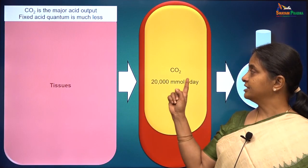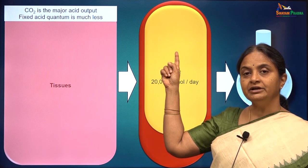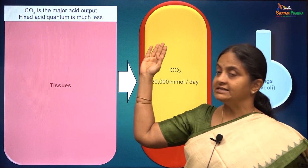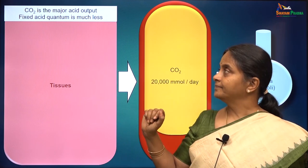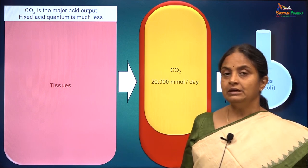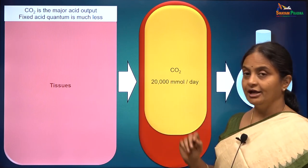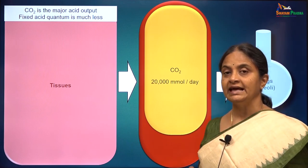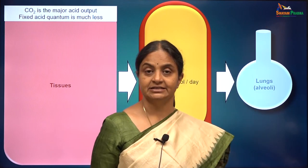Hydrogen ion concentration in plasma remains around 40 nanomoles per liter even though acids are constantly added to plasma due to metabolic processes in tissues. The major acid output is in the form of carbon dioxide. Carbon dioxide is referred to as the volatile acid because it can be easily eliminated by the lungs.